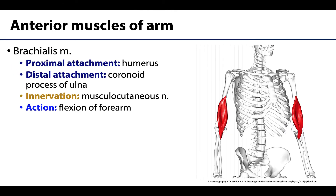Deep to the biceps brachii is the brachialis muscle. Its proximal attachment is around the mid-shaft region of the humerus, so it does not cross the shoulder joint like the biceps brachii. Its distal attachment is on the coronoid process of the ulna and just distal to it. Since it attaches on the ulna and not the radius, it plays no role in pronation or supination.